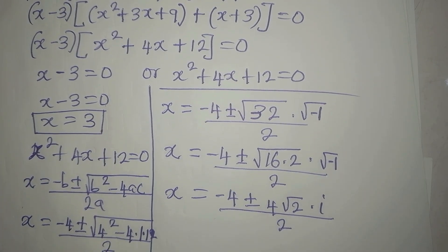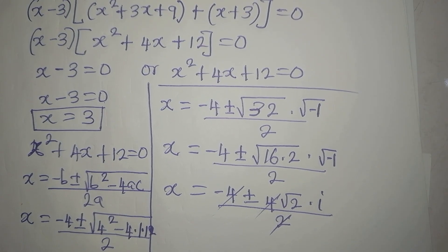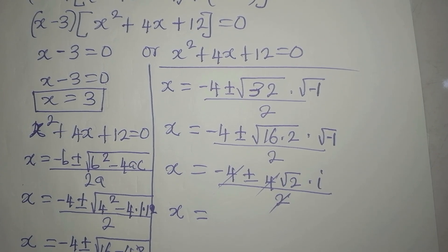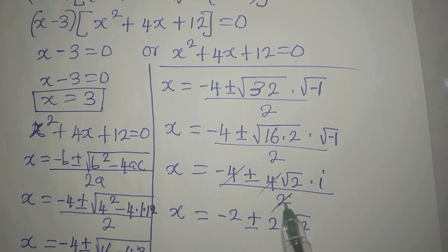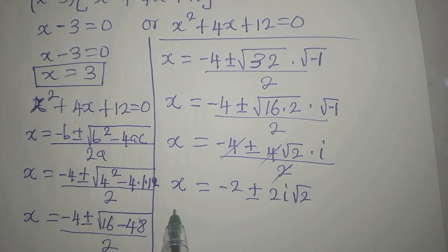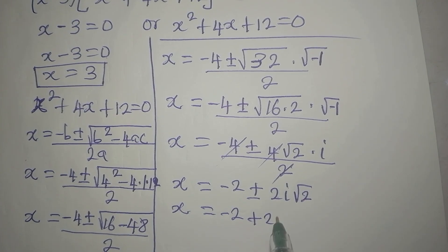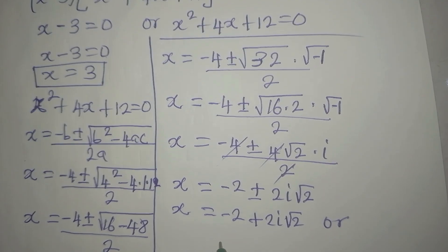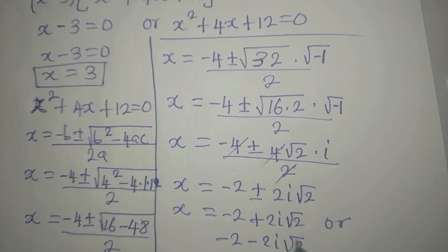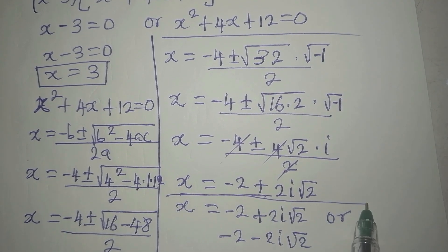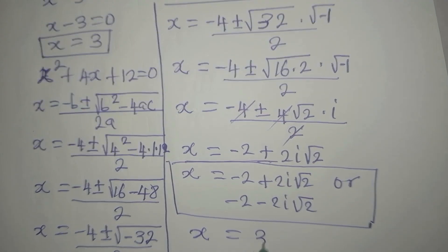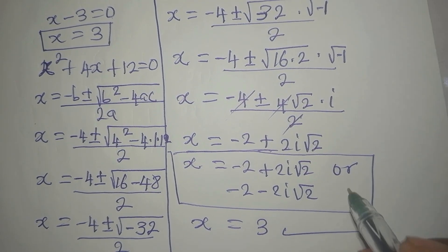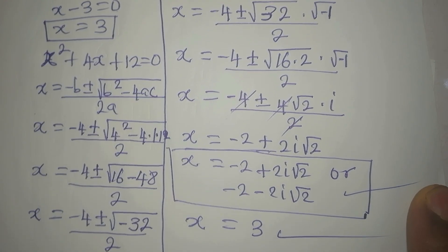We divide each term by 2: minus 4 over 2 is minus 2, and 4i root 2 over 2 is 2i root 2. So our x equals minus 2 plus 2i root 2, or x equals minus 2 minus 2i root 2. These are two additional solutions, but mind you, we already had x equal to 3, and that is the only real solution. The other two are complex solutions. Thank you for watching.